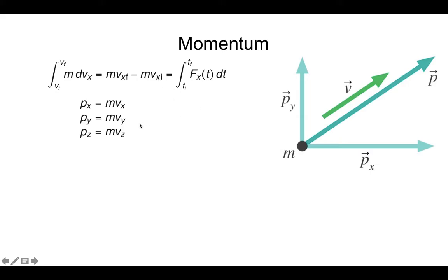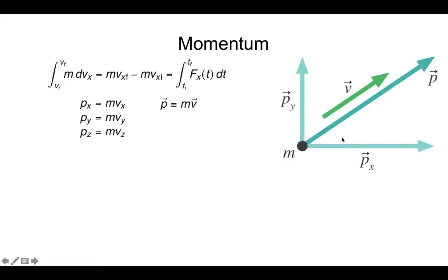We called this product of mass times velocity momentum, and we showed that it was a vector quantity, so it has x, y, and z components. Those components can be broken into mass times the x direction of the velocity, the y direction, and the z direction of velocity. In a more compact way, we write this down using vectors. So momentum is a vector, and we define it as mass times the vector velocity v. It can have components just like the velocity in any direction in three-dimensional space.